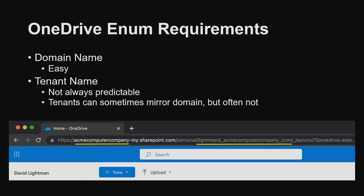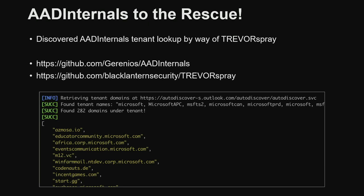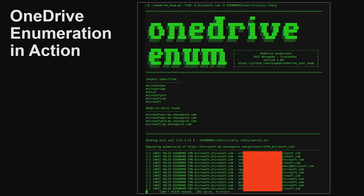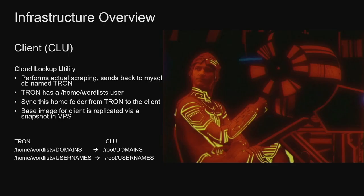To enumerate a OneDrive user, you need the domain name and the tenant name — but you don't always know the tenant name. Often it matches the domain name minus the TLD, but that's not always the case. Dr. Azure AD identified a way to do this — he published it in AAD Internals, and Trevor Spray added it into their tool. It identifies tenant names using a Microsoft lookup service. I implemented these into my own tool, OneDriveEnum, and started enumerating users. I added networking capabilities with a SQL backend and a bunch of VPSs. For this I used CLUE — a Cloud Lookup Utility — which would sync back to my server.